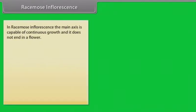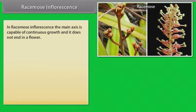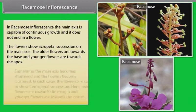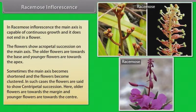In racemose inflorescence, the main axis is capable of continuous growth and it does not end in a flower. The flowers show acropetal succession on the main axis; the older flowers are towards the base and younger flowers are towards the apex. Sometimes the main axis becomes shortened and the flowers become clustered; in such cases the flowers show centripetal succession, where older flowers are towards the margin and younger flowers are towards the center.